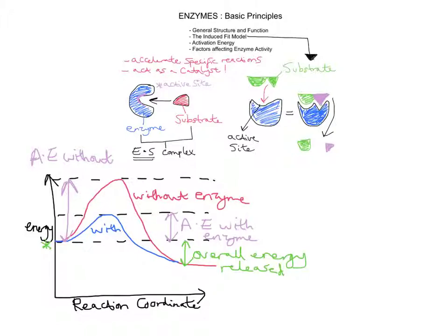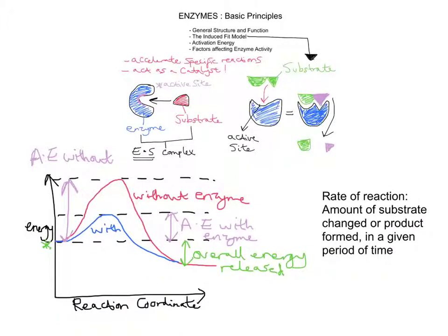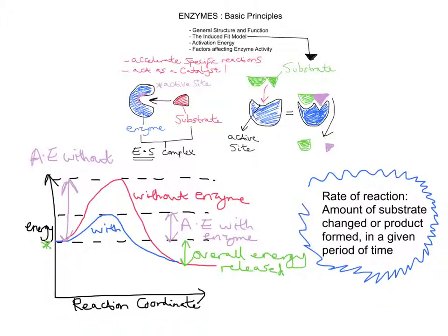Now I'm going to finish this video by looking at the factors that affect enzyme activity. The rate of reaction is defined as the amount of substrate changed or product formed in a given period of time. There are four variables in an enzyme-catalysed reaction that can affect that rate: temperature, pH, enzyme concentration, and substrate concentration.